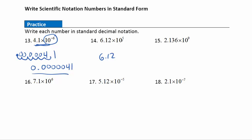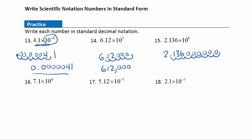Question 14: 6.12 times 10 to the positive fifth — a positive exponent makes the number bigger by moving the decimal five places to the right. Moving five places and adding zeros gives 612000. Adding commas from the right: that's six hundred and twelve thousand. Question 15: 2.136 times 10 to the ninth — moving nine places to the right gives us two billion one hundred and thirty six million.